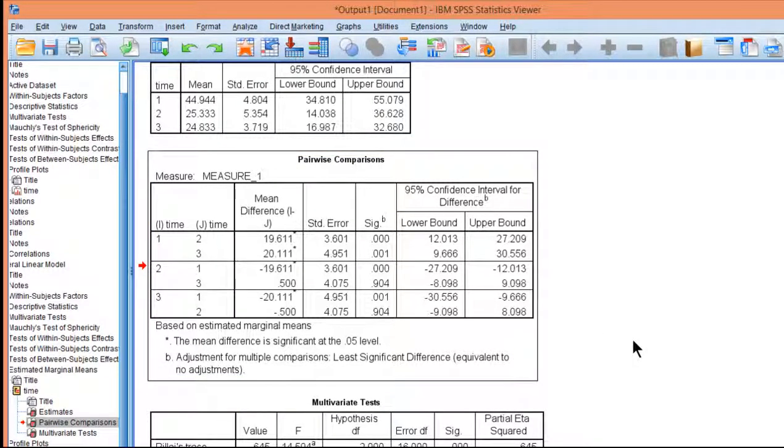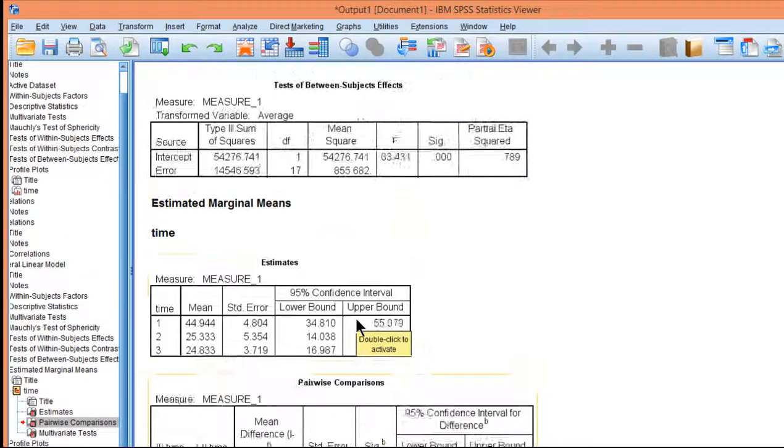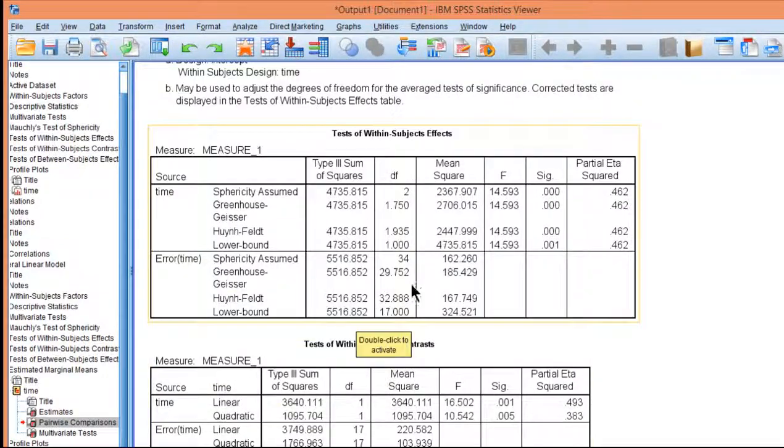In the one-way between subjects ANOVA, when the Fisher's LSD is done, the standard errors are all the same, and that's because SPSS uses an error term that is from the ANOVA, which is technically the power of doing an ANOVA in the context of multiple comparisons—that there's a pooled error term used.